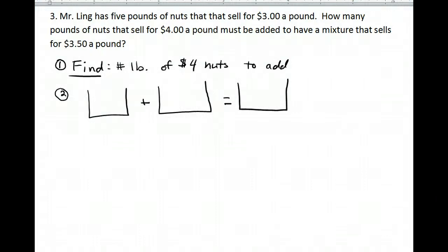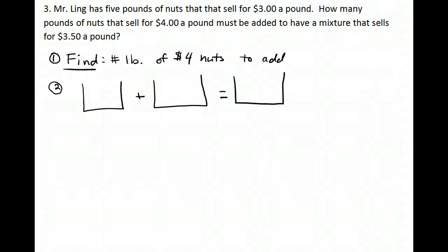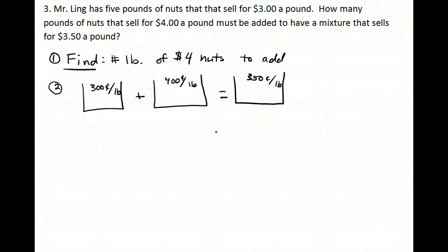Here's the third problem: Mr. Ling has 5 pounds of nuts that sell for $3 a pound. How many pounds of nuts that sell for $4 a pound must be added to have a mixture that sells for $3.50 a pound? I've drawn my three buckets and written my find statement. The $3 nuts are 300 cents per pound, the $4 nuts are 400 cents per pound, and the mix sells for 350 cents per pound. We're trying to find the pounds of $4 nuts, so that's X.